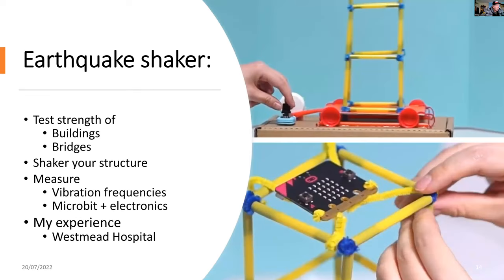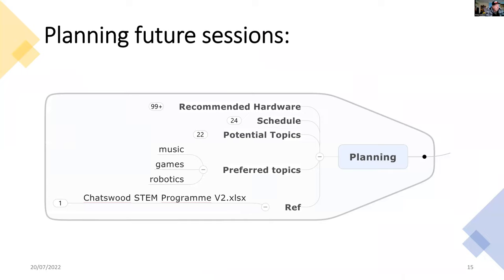I also had a look at earthquakes and the effect of earthquakes on buildings and bridges. You can see that the MicroBit has been used to monitor the vibrations and resonance frequencies of a building that's been shaken by an earthquake shaker — this is an interesting potential project in STEM education. So what would you like to do? What projects should we start thinking about for next term and for next year?